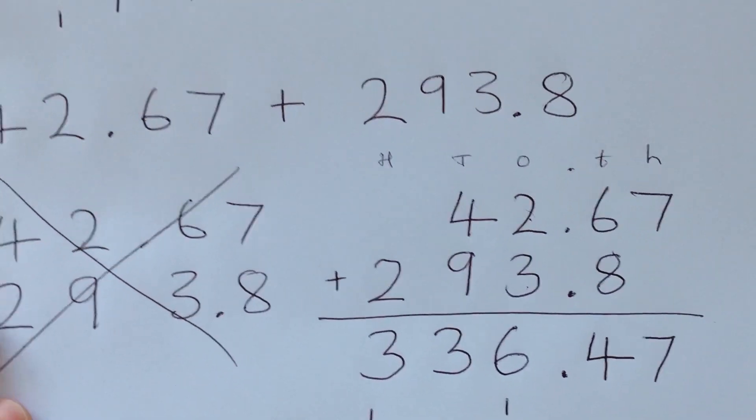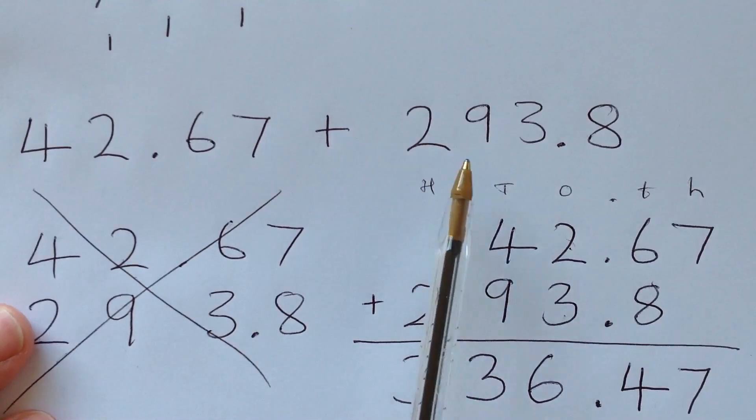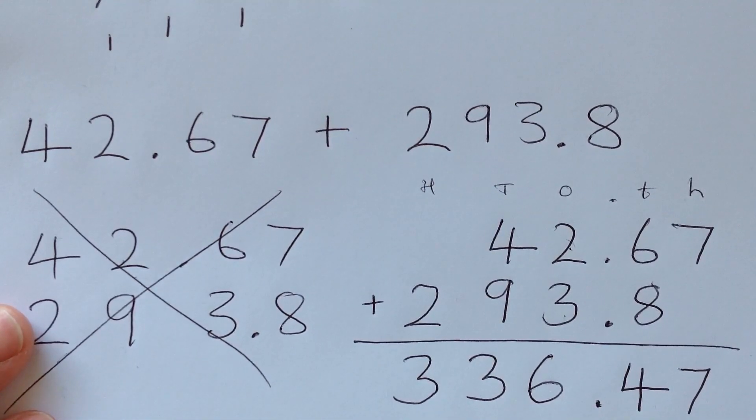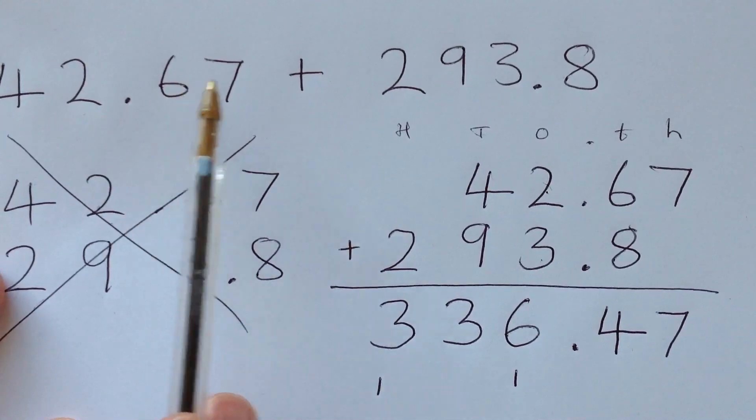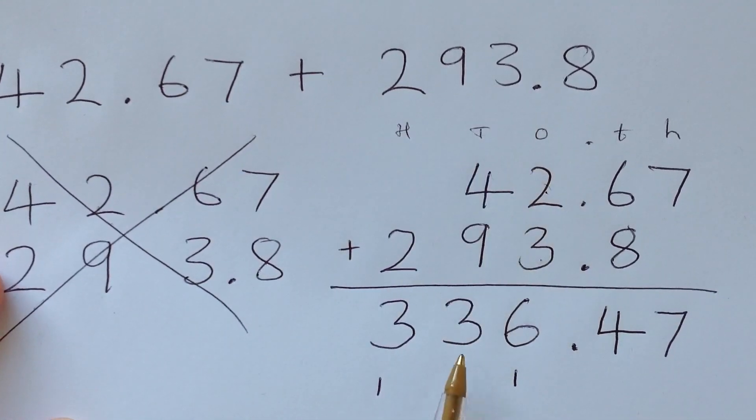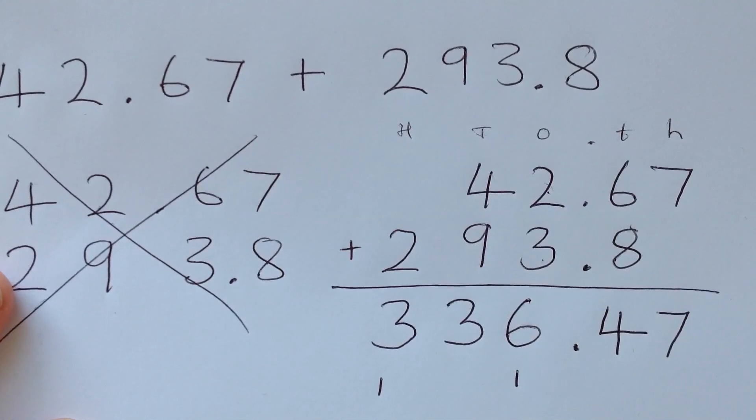And actually, when you think about the problem, if we go back to the question, I'm adding forty to two hundred and ninety. Well, if I add forty to two hundred and ninety, I get three hundred and thirty, don't I? Look at how a little bit of approximating and rounding shows me how close my answer is. So when I have forty-two plus two hundred and ninety-three, I'm going to get really close to here. And the point six-seven and point eight changes the answer slightly.